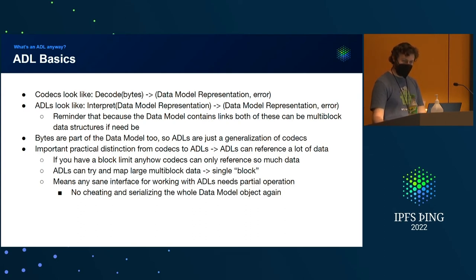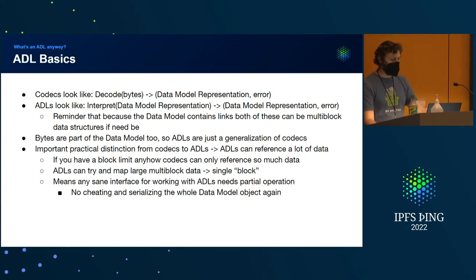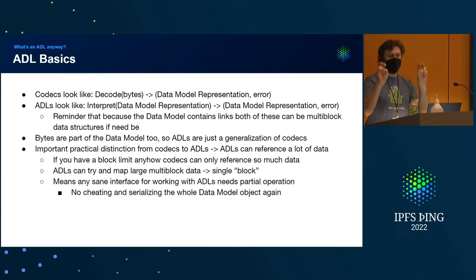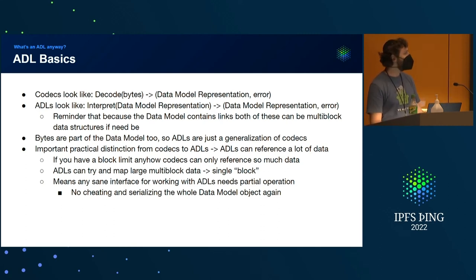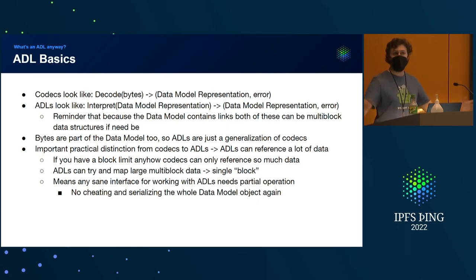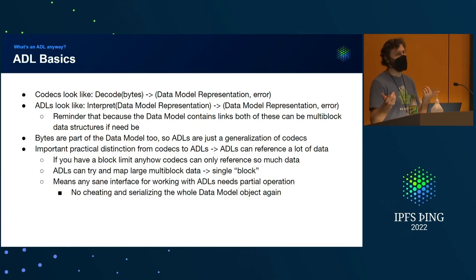If you have a block limit, codecs can only reference so much data, and ADLs have to map multi-block to single block. This means that anyone who wants to work with ADLs needs this partial access — just interfaces for working with the data. It's still a string, it's still a byte, it's still an integer. Yeah, it's an 80 exabyte large integer and you might only want parts of it, but it's still an integer. We don't want to serialize the whole data model object because that could be very, very big.